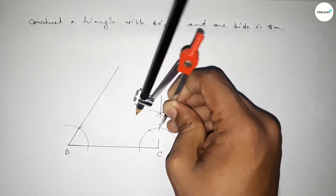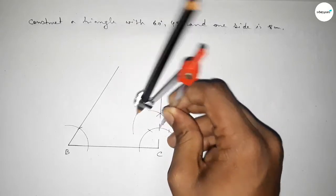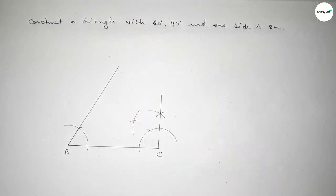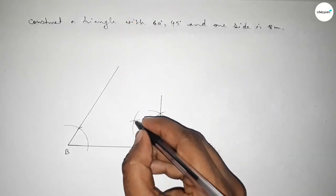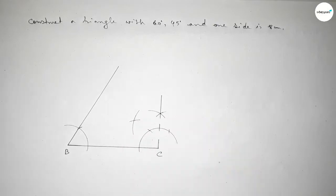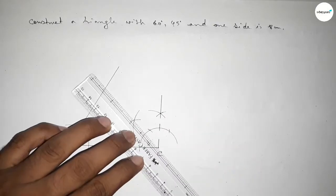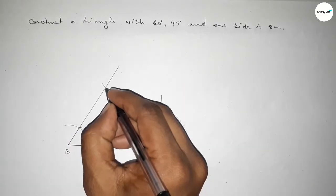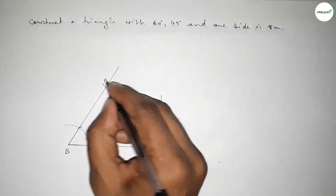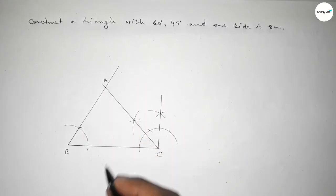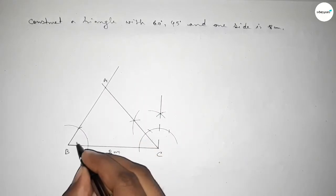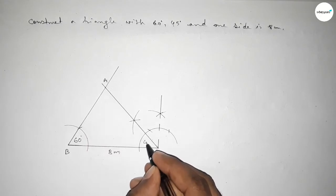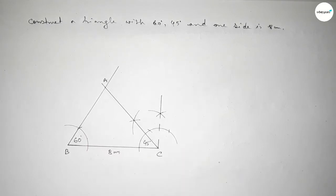Now bisecting this angle — putting the compass here, taking greater than half of this, and drawing an arc. Putting the compass here and cutting here, so both the curves intersect at a point. Joining this, and both lines intersect at a point.